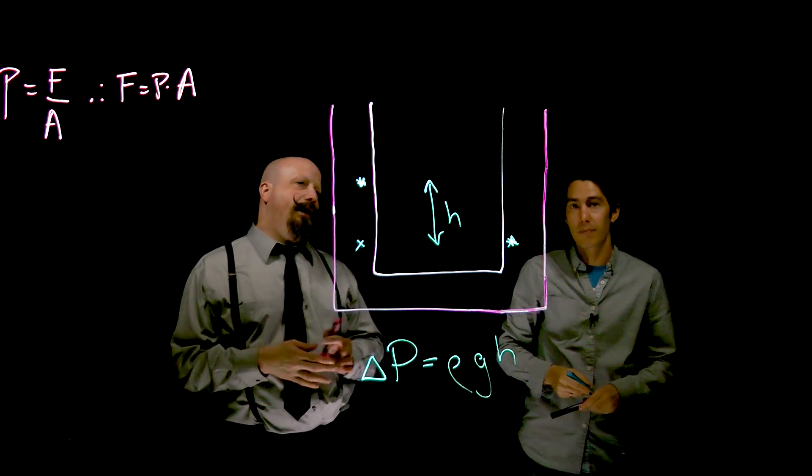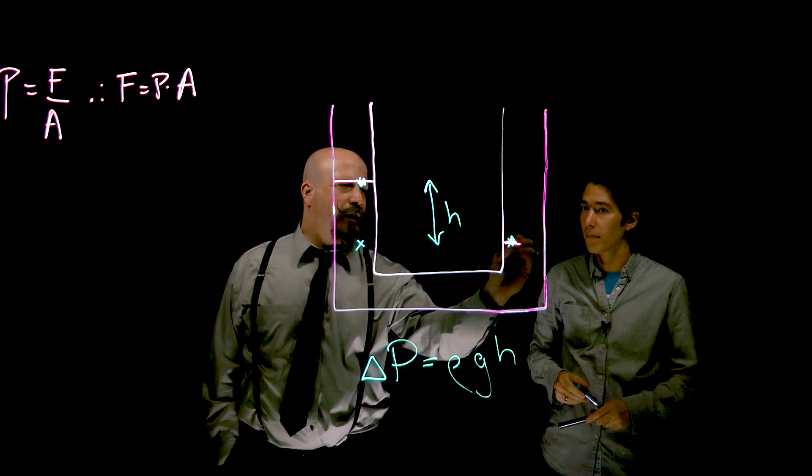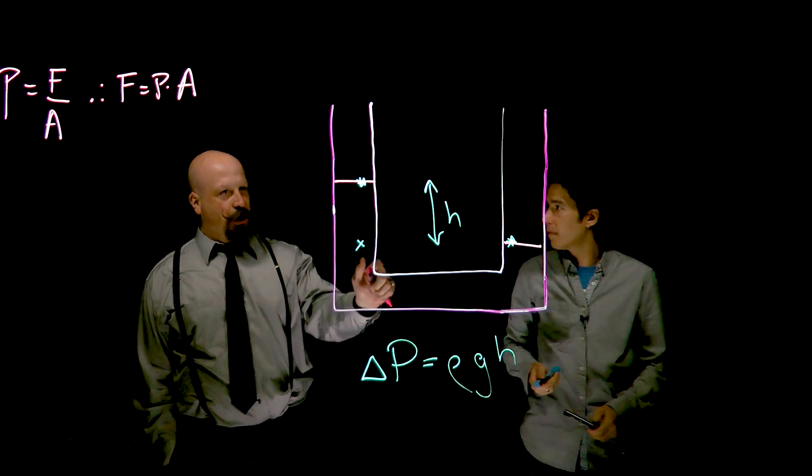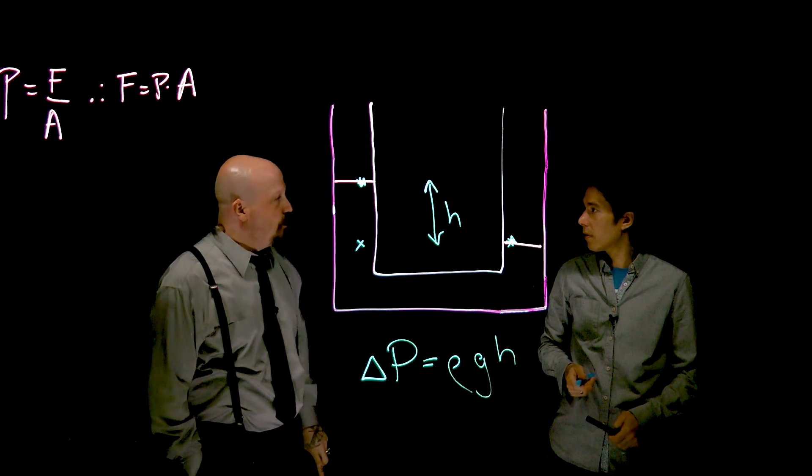So what we're actually looking at then in a scenario like this is something where we have a water level here and a water level here. Right. And we can discuss the change in pressure from here and here simply as just rho G H.